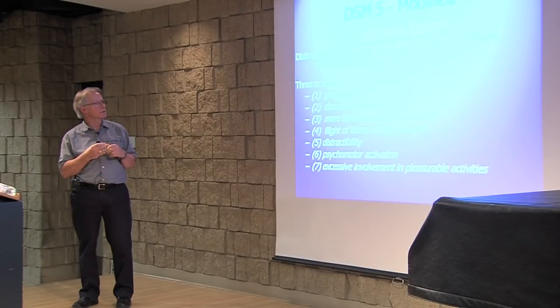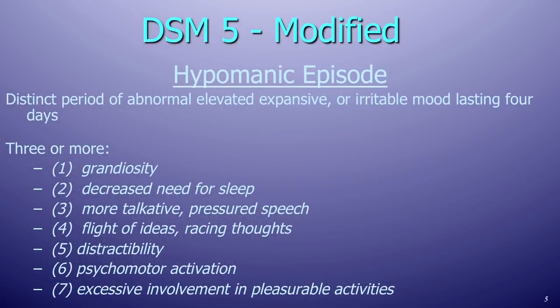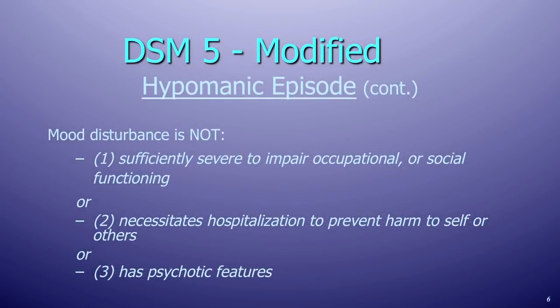The other episode we see in bipolar illness is the hypomanic episode, which is really just a mild or less severe episode of mania. In a hypomanic episode, they have the abnormal elevated, expansive, or irritable mood only going on for four days instead of seven. They still need three or more of the criteria, but their mood disturbance is not sufficiently severe to impair their ability to work or function socially, nor is it severe enough to require hospitalization, nor does it have psychotic features.